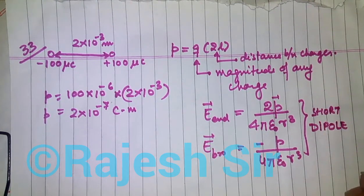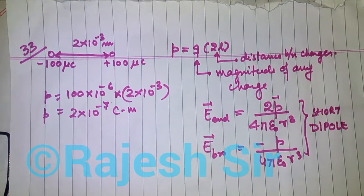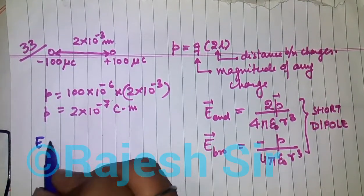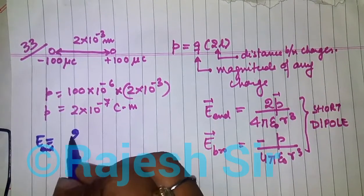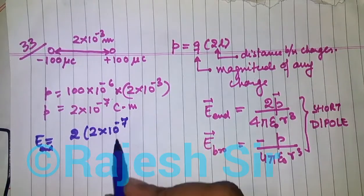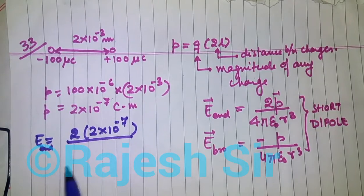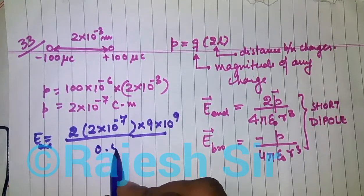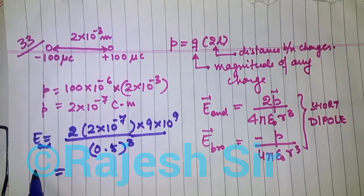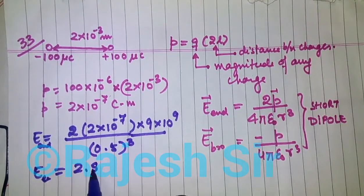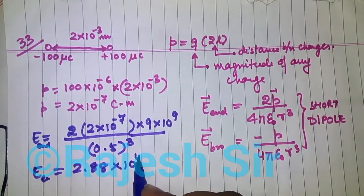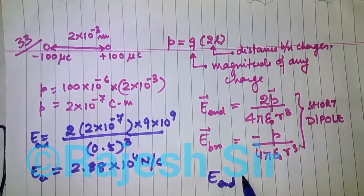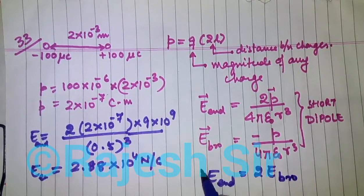In most numerical problems, dipoles are considered to be short. Now, for the magnitude of the electric field at the end-on position: E = 2 × (2×10⁻⁷) / (4πε₀r³). Since 1/(4πε₀) = 9×10⁹ and r = 0.5 m, on solving, the electric field at the end-on position comes out to be 2.88×10⁴ newton per coulomb.